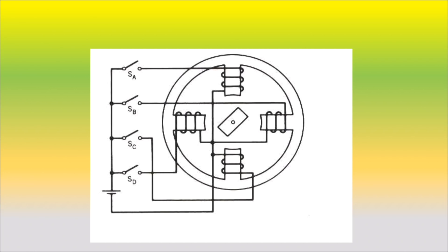Here are four switches: SA, SB, SC, and SD. One battery is positive, and they are connected to one terminal. They are connected to one terminal, and when it is done with SA, the switches control the stepper motor coils.